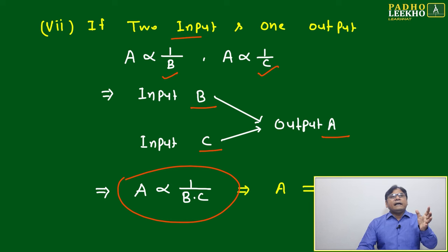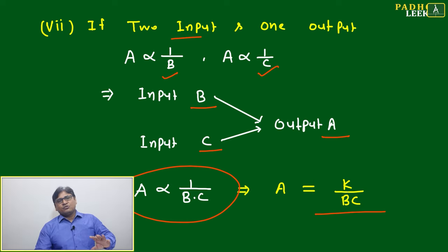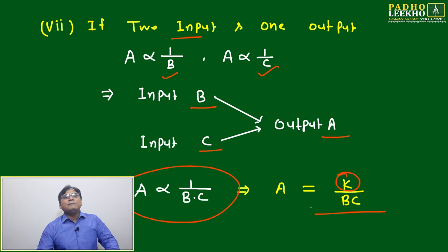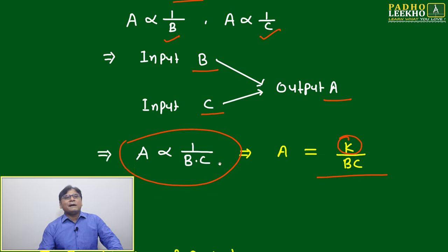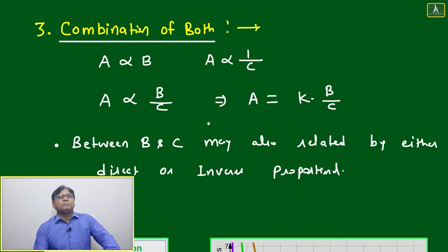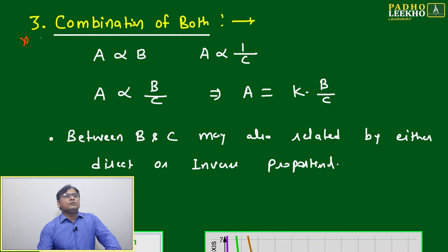How much A is depending on B and how A is changing with respect to C depends on the condition of the question. The value of K will decide the exact variation between A and B, A and C, and maybe internal variation between B and C also.